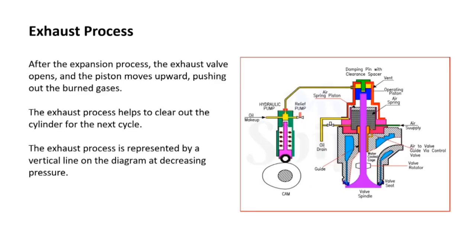The last process is the exhaust process. After expansion, the exhaust valve opens and the piston moves upward from BDC to TDC, pushing out the burned gases. The exhaust process helps to clear out the cylinder for the next cycle and is represented by a vertical line on the diagram at decreasing pressure.